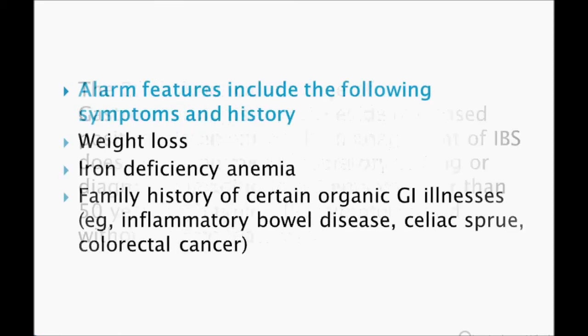What are those alarm features? Weight loss, iron deficiency anemia, and family history of certain organic GI illness such as inflammatory bowel disease, celiac sprue, or colorectal cancer. If these features are present, investigate.